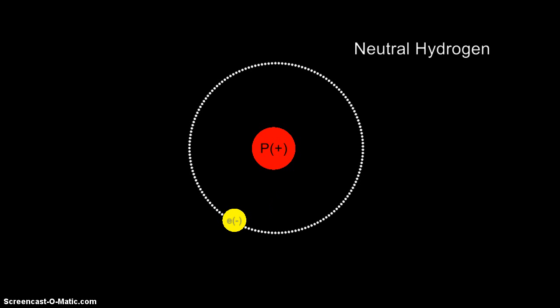Most atoms that we come into contact with on a daily basis are neutral, meaning that the number of negatively charged electrons balances out the number of positively charged protons.